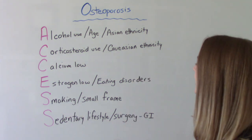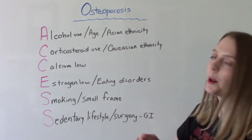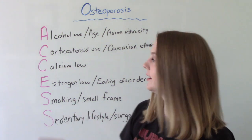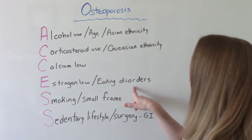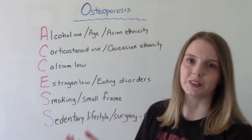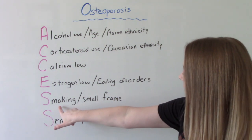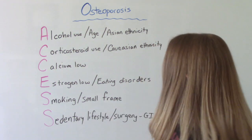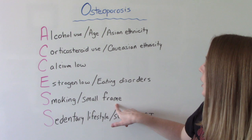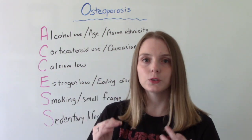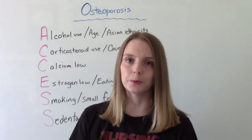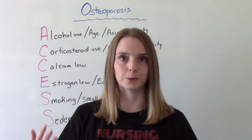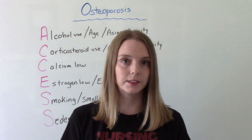Our second E is for those who have eating disorders. Because you're malnourished, you're not getting enough calcium in your body — that's a risk factor. Our first S is for smoking, so those who smoke cigarettes are at higher risk. And then being of small frame — being a petite or relatively thin person puts you at higher risk, because you have less bone overall to lose than a larger person.